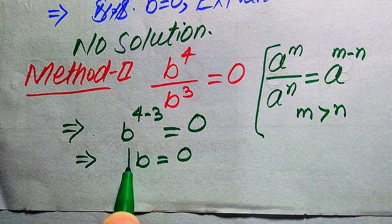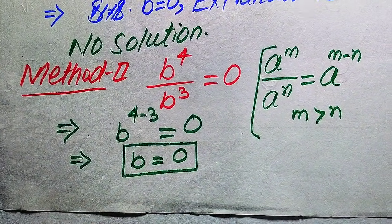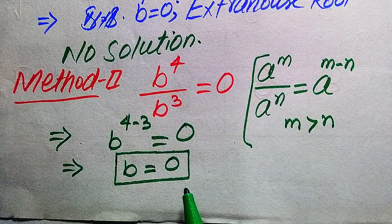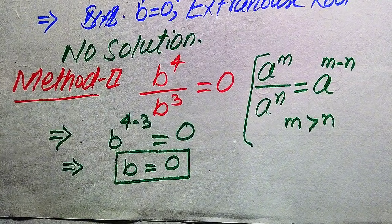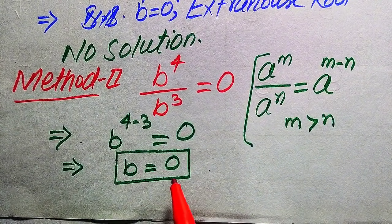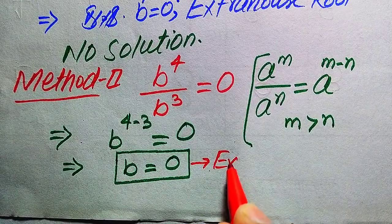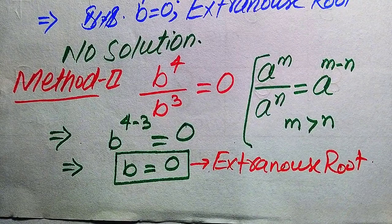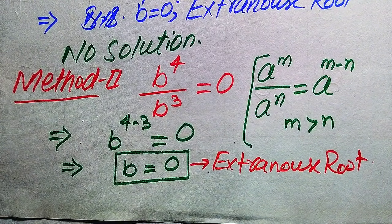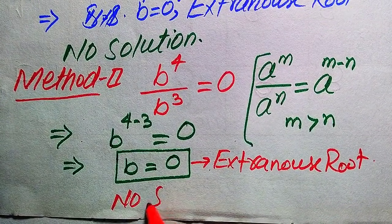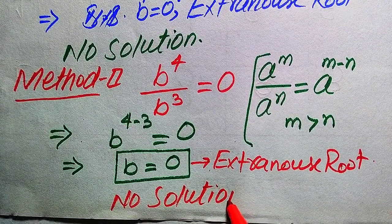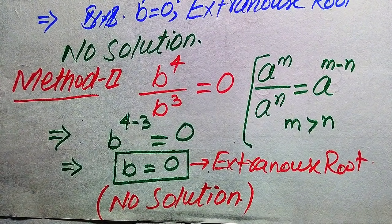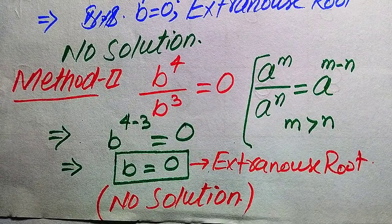This simplifies to b to the power of 1, so b equals 0. This is the only root from the second method as well. However, we already verified in the first method that b equals 0 does not satisfy the given equation. Therefore, we finally conclude that this equation has no solution, as no value of b satisfies the given statement. Thank you for watching — please subscribe to my channel for more videos.